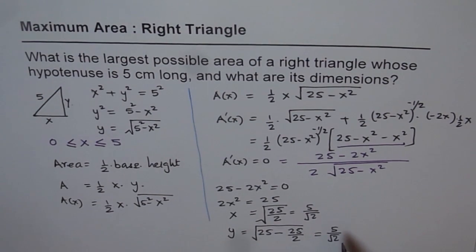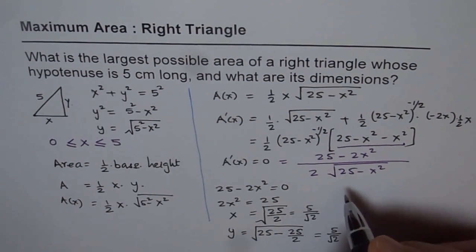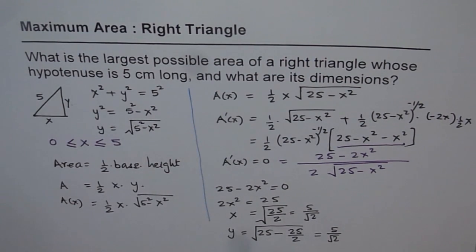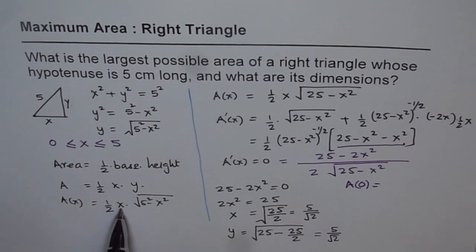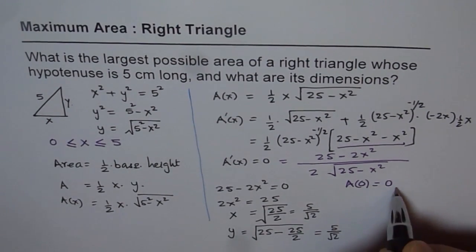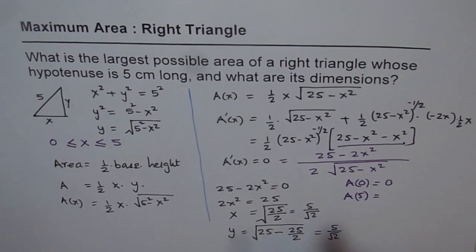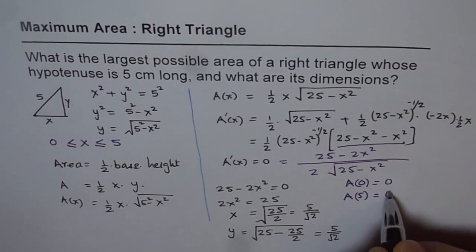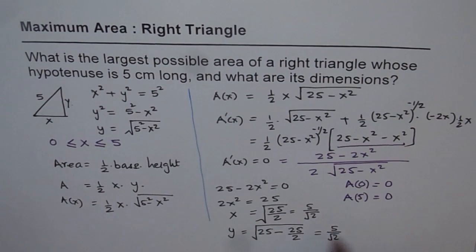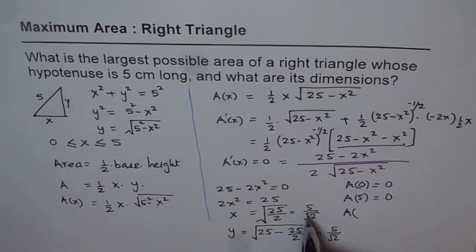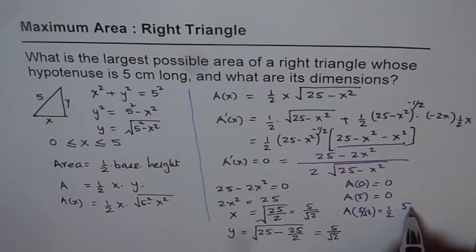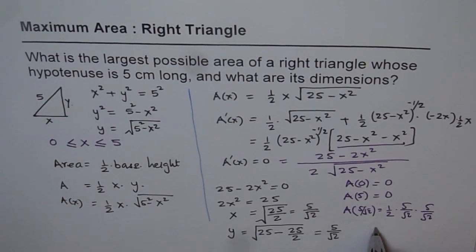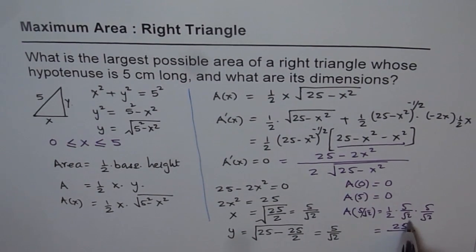To confirm this is indeed a maximum, we check the value of the function at the boundary conditions and at the critical number. Area when x equals 0 gives 0. Area when x equals 5 gives 25 minus 25 equals 0, so that is also 0. The area when x equals 5 over root 2 is half times (5/√2) times (5/√2), which equals half times 25 over 2, giving an area of 25 over 4 square units.